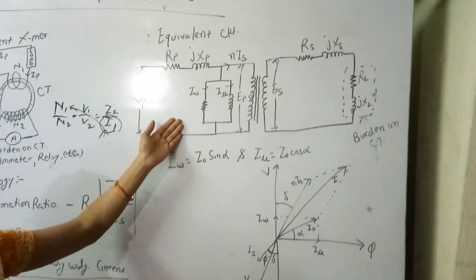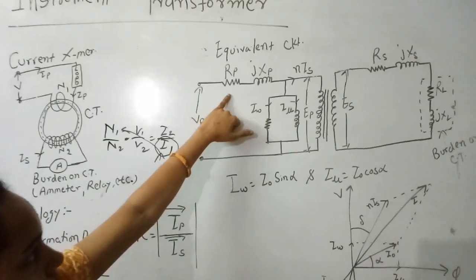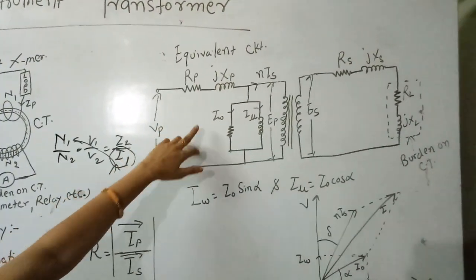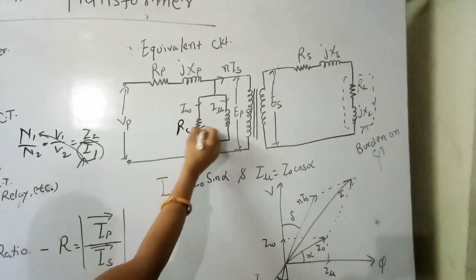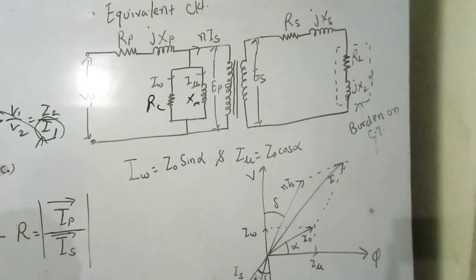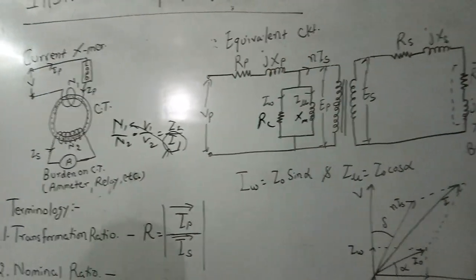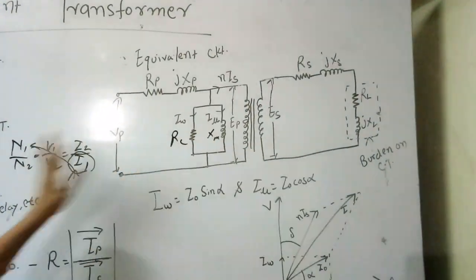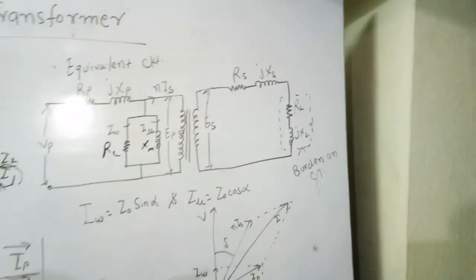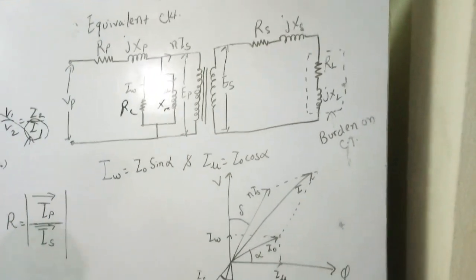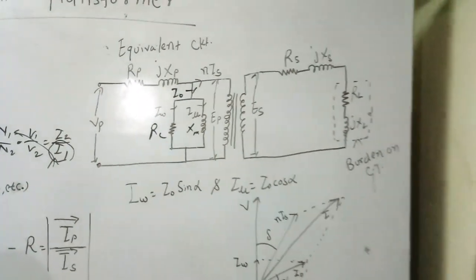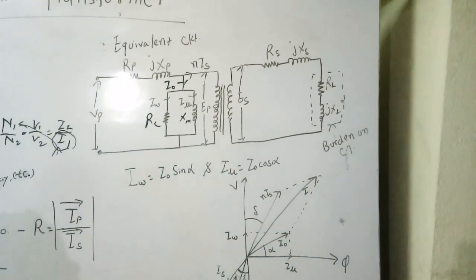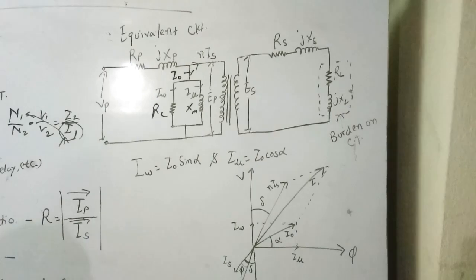Now we come to the equivalent circuit of the CT. It has a primary combination of resistance and inductance, a parallel combination of core parameters RC and XM, and a secondary equivalent circuit with secondary resistance and secondary inductance. The burden on the CT measures current. The no-load or exciting current produces the magnetic flux, following the basic principles of the transformer which are also applicable for CT.